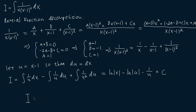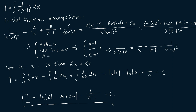Let's go back to the original variable x to get that our integral I is equal to the natural logarithm of the absolute value of x, minus the natural logarithm of the absolute value of x minus 1 — since u was equal to x minus 1 — minus 1 over x minus 1, plus our integration constant C. And this here is our final result. To be continued...